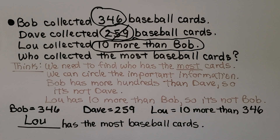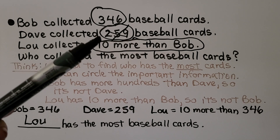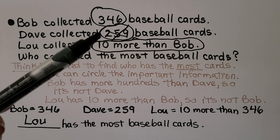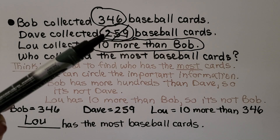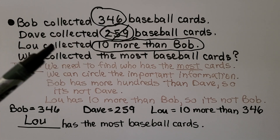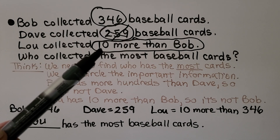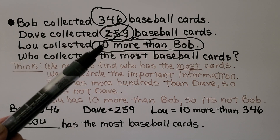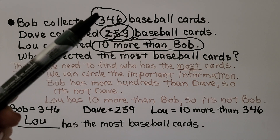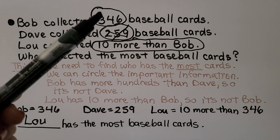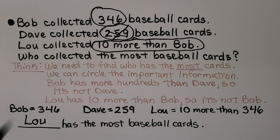We can solve this quickly by seeing that Dave doesn't have the most because he doesn't have as many hundreds. And since Lou collected 10 more than Bob, Lou has more than Bob's number. It has to be Lou. This could be very easy to solve if we understand what 10 more means.